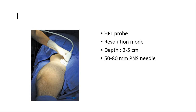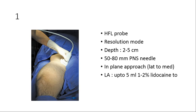A 50 to 80 mm needle is generally required. I use an in-plane approach, lateral to medial, though medial to lateral is also possible. The local anesthetic volume is 5 ml for each division of the obturator nerve block, using half-concentration lidocaine 1–2%. If the nerve itself is targeted rather than a division, 10 ml of half-concentration lidocaine is used.